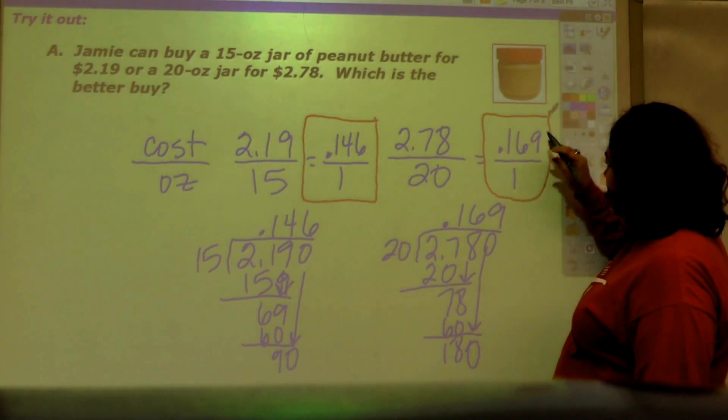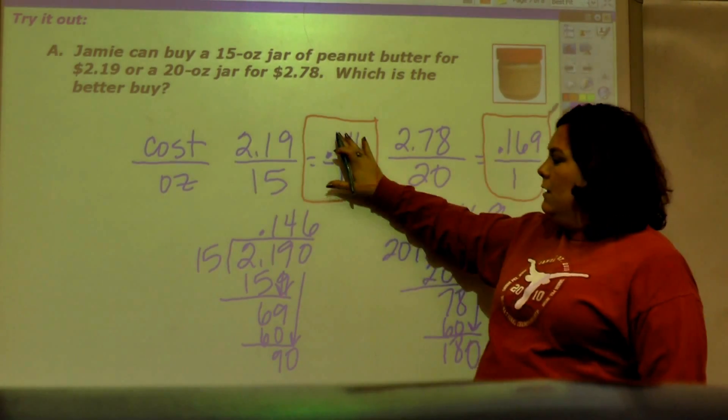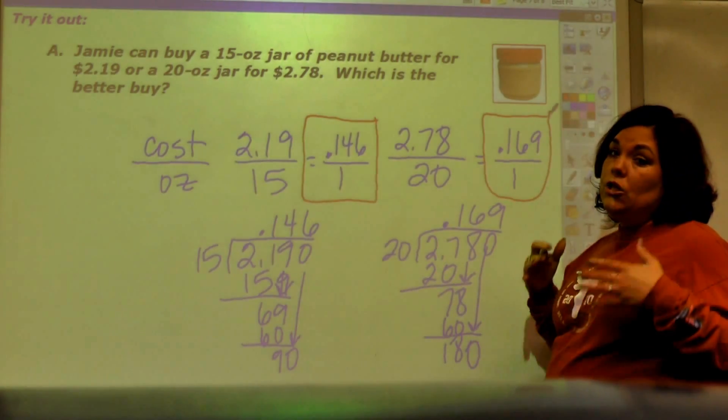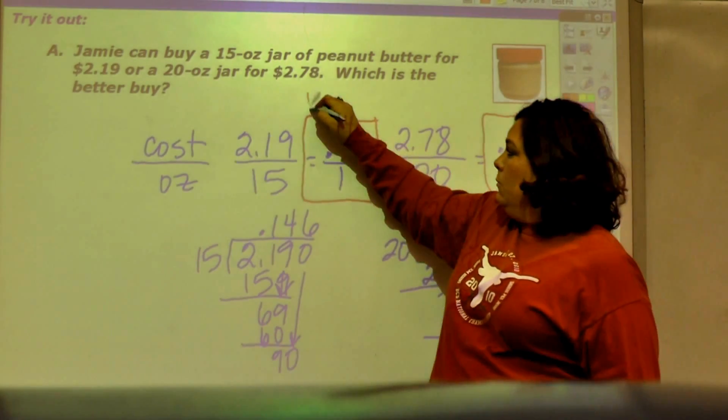So that's this, and always look at this as money. This is 17 cents, this is 15 cents. Which is the better deal? Of course, it's this one.